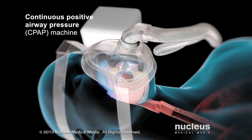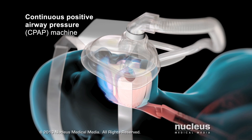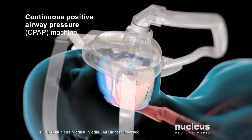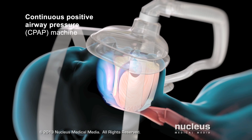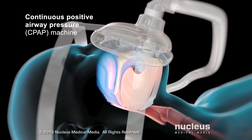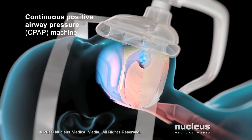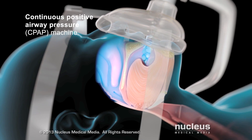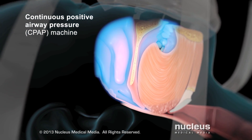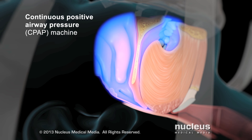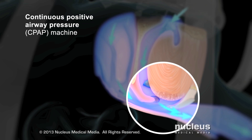The most common and effective treatment for obstructive sleep apnea is a continuous positive airway pressure, or CPAP, machine. This machine pumps air through a tube into a mask that fits over your nose or both your nose and mouth. The mild air pressure of the CPAP machine helps keep your airway open, enabling you to get a deep, restful sleep.